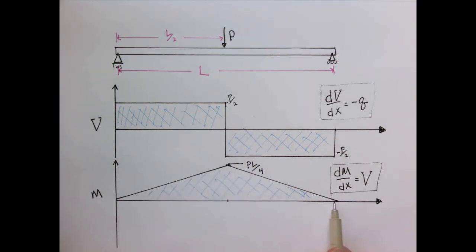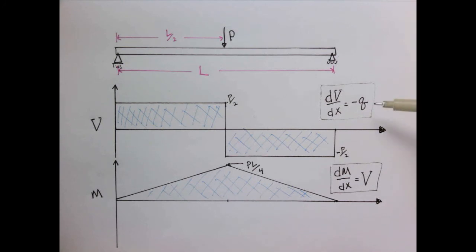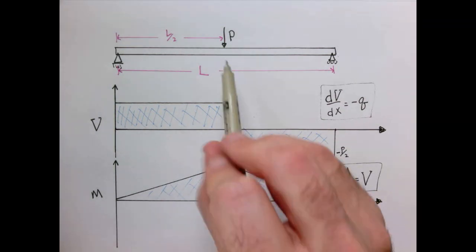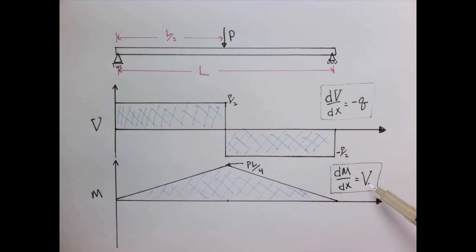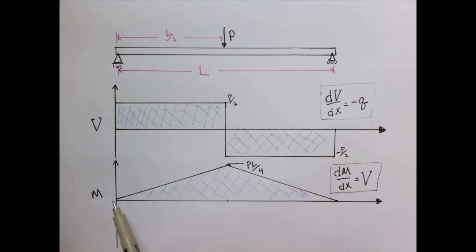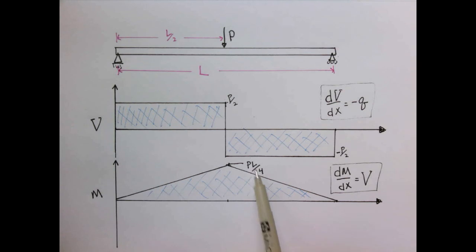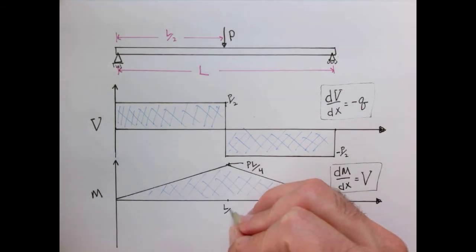The moment diagram starts at 0 at the ends, increases linearly to a maximum of PL/4, then decreases back to 0. These relationships hold because here Q = 0 — there is no distributed load — so dV/dx is zero, giving constant regions of shear with an instantaneous jump at the point load. Since dM/dx = V, a function whose derivative is a constant is a line: positive slope in the first half, negative in the second. The slope of P/2 is consistent with reaching a maximum of PL/4 at x = L/2.